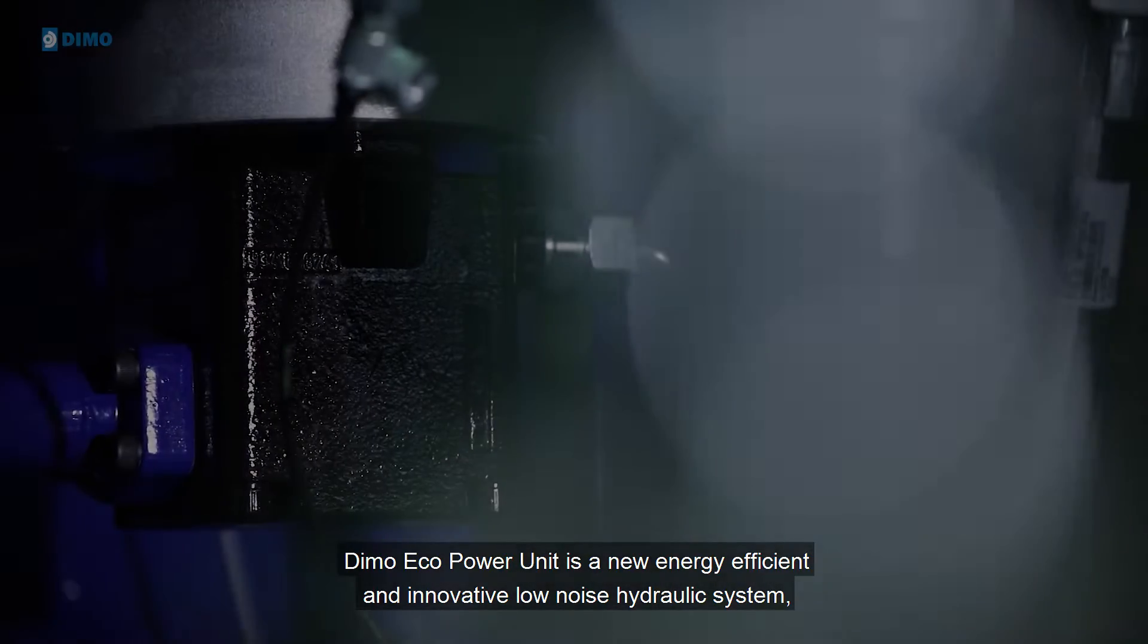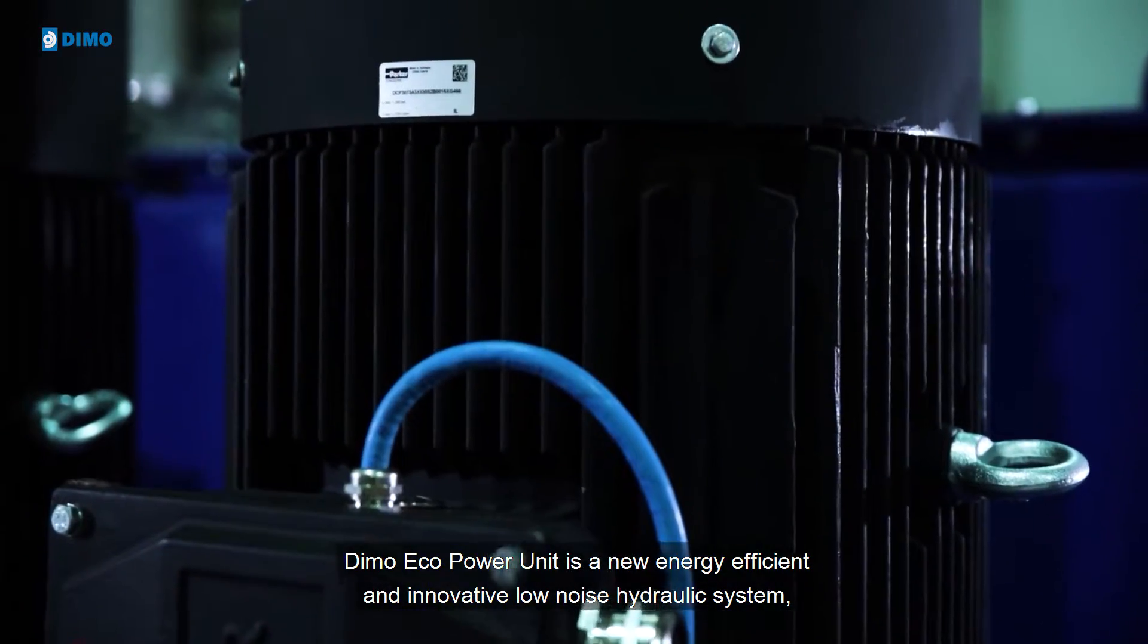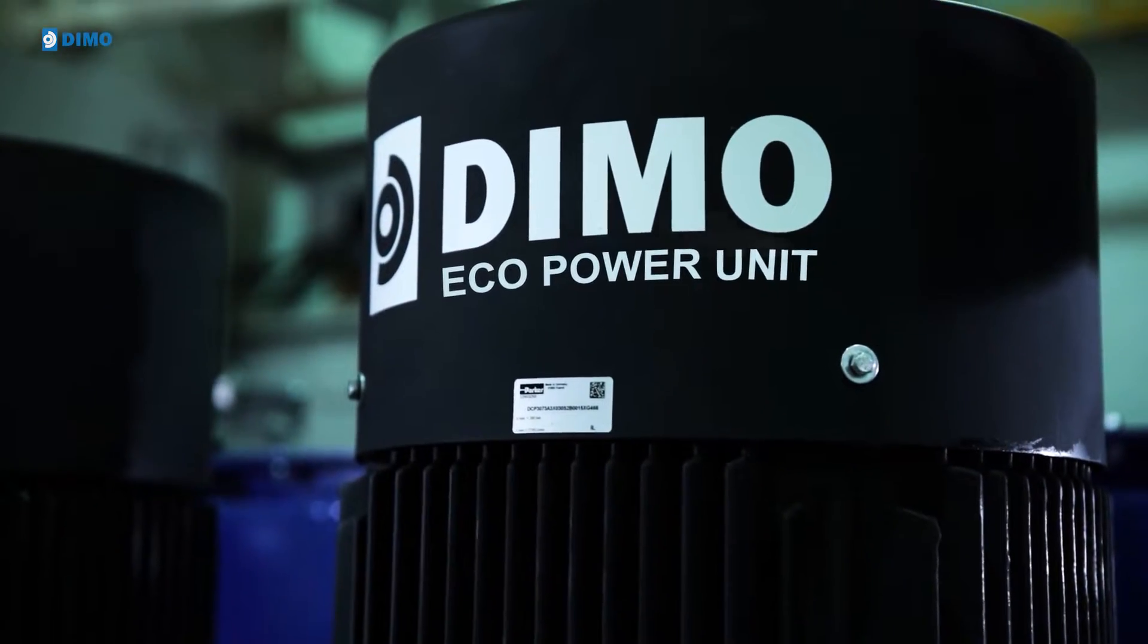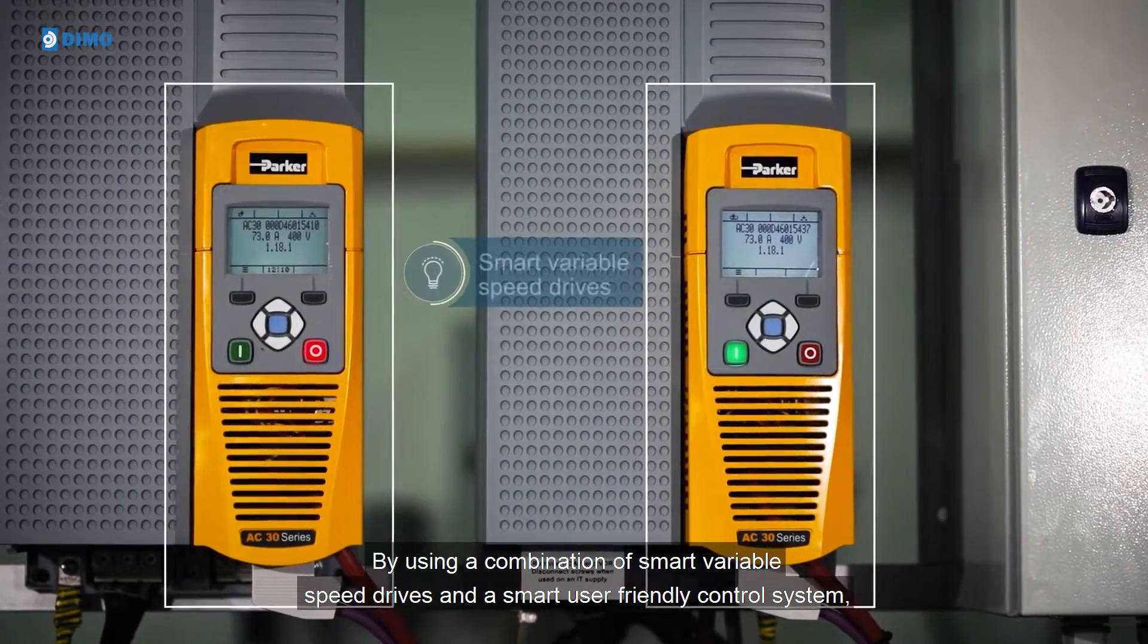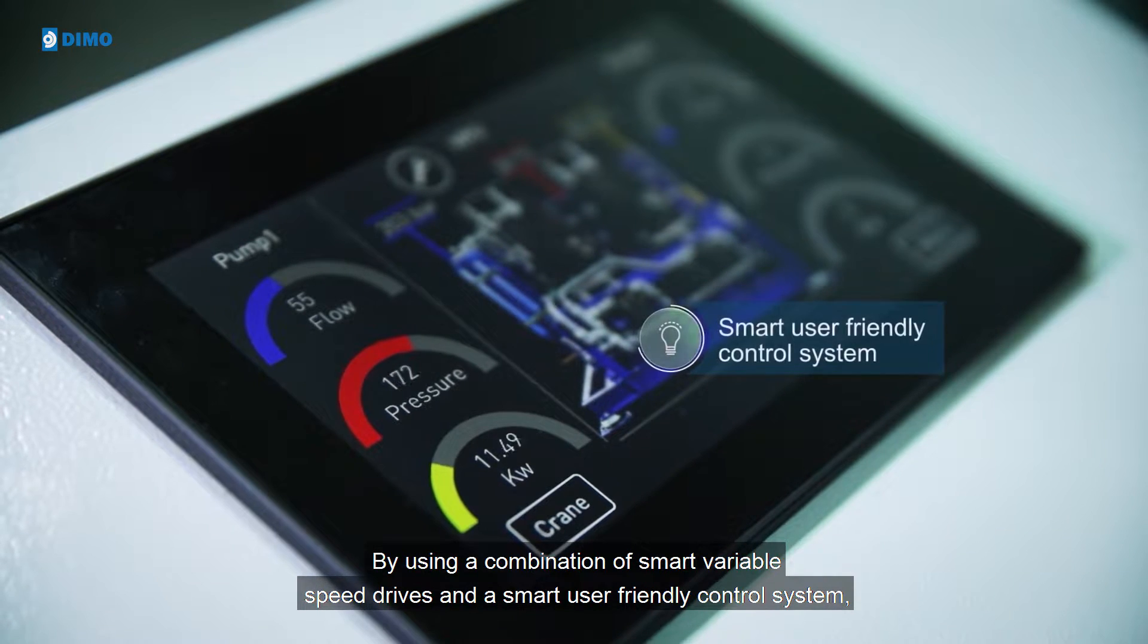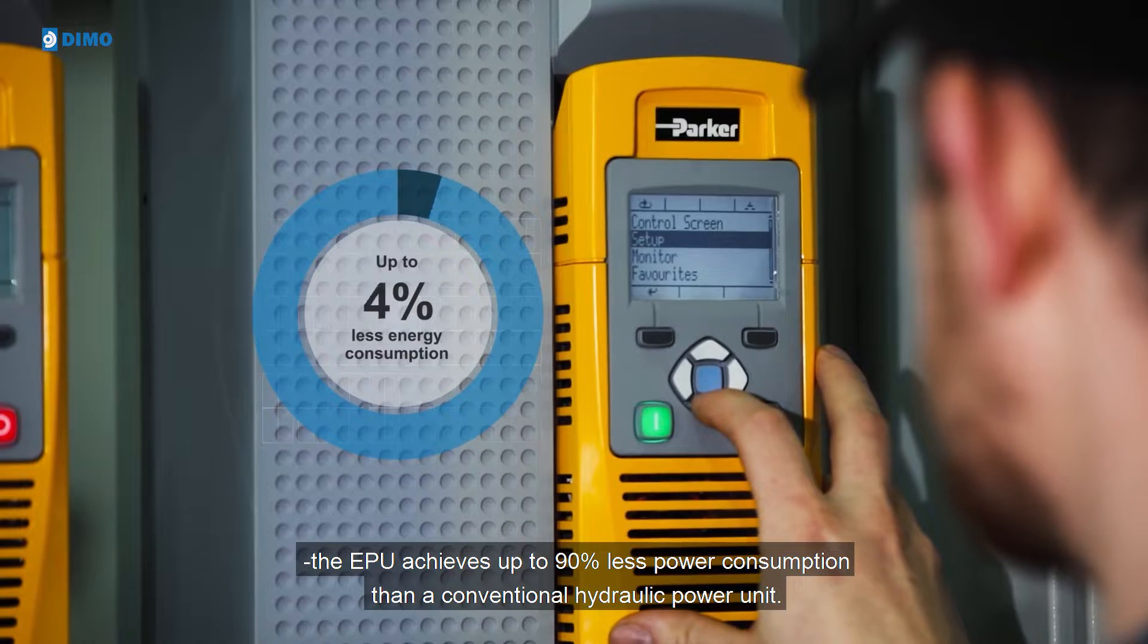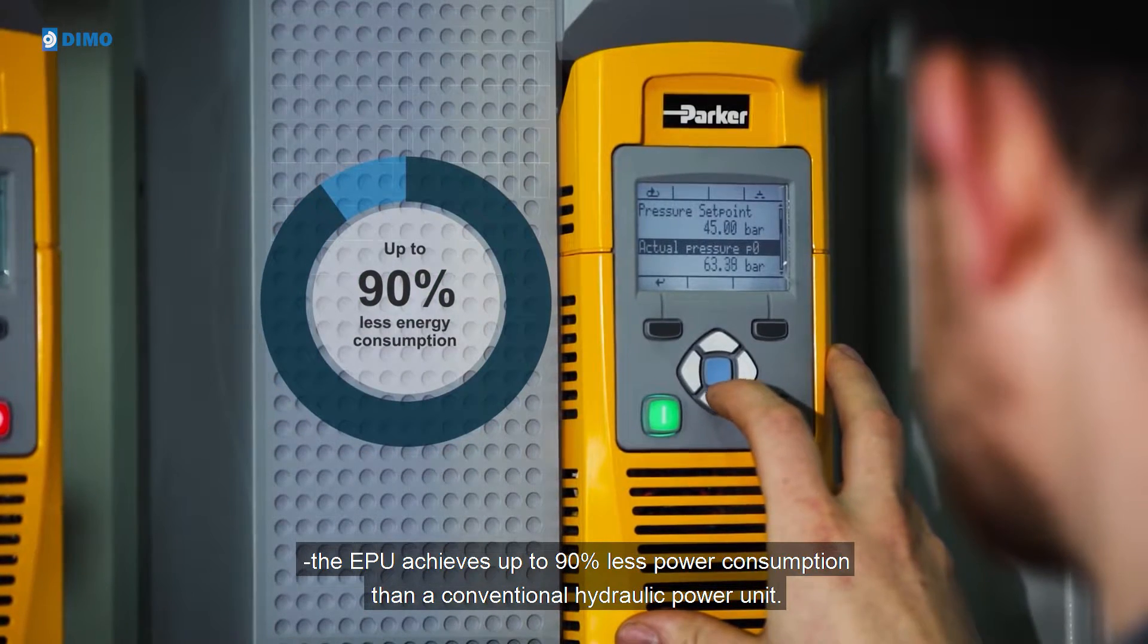DEMO-ECO Power Unit is a new energy-efficient and innovative low-noise hydraulic system designed by DEMO. By using a combination of smart variable speed drives and a smart user-friendly control system, the EPU achieves up to 90% less power consumption than a conventional hydraulic power unit.